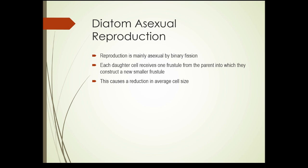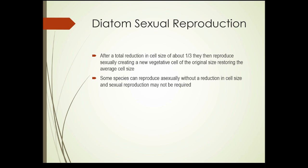As you can imagine, since the frustules can't grow, the average size of the diatom cells is reduced each time they go through binary fission.